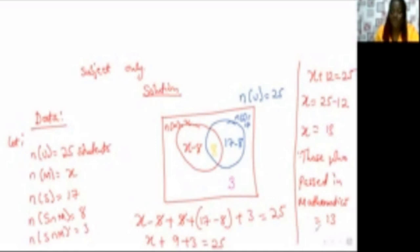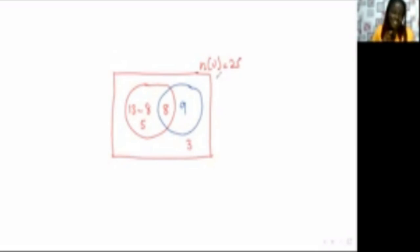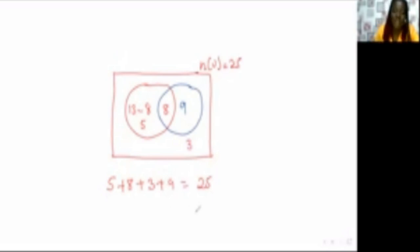When you finish, redraw your Venn diagram and complete it to make your work clear and understandable. So we have the completed Venn diagram. To verify: add everything inside — 5 plus 8 plus 9 plus 3 equals 25. That confirms our universal set. Always fix the values into your circles to confirm your answer.